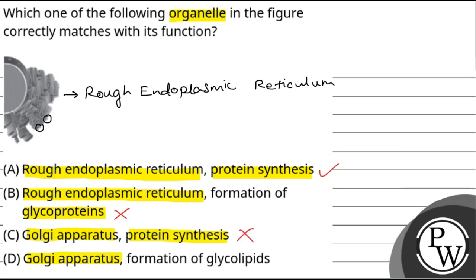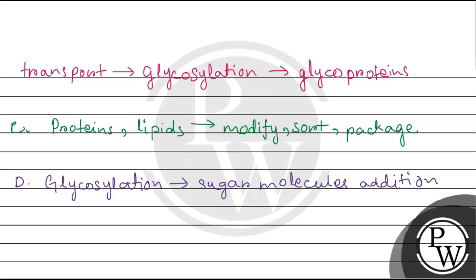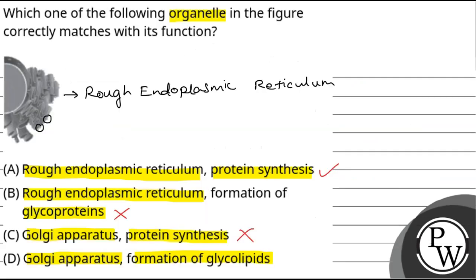Option D is Golgi apparatus and formation of glycolipids. We have seen that the Golgi apparatus's important function is glycosylation, where proteins and lipids have sugar molecules added to form glycoproteins and glycolipids. So Golgi apparatus does play a major role in the formation of glycolipids — the organelle and function are correctly matched — but it doesn't match the figure shown. That's why this option is wrong.